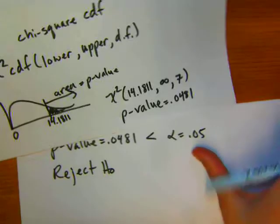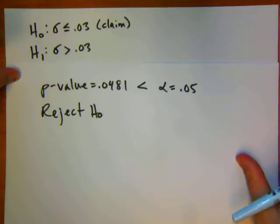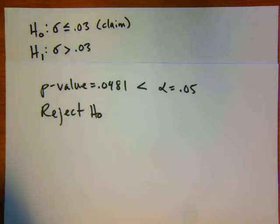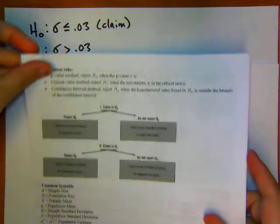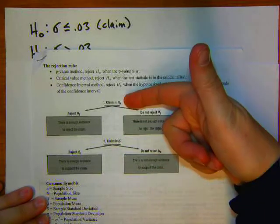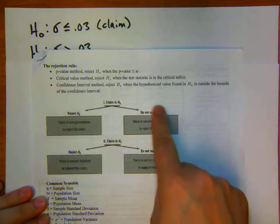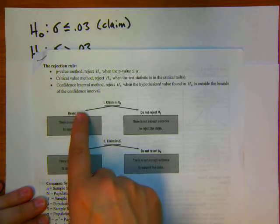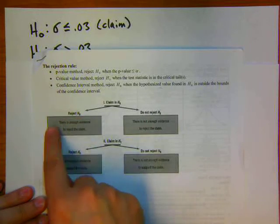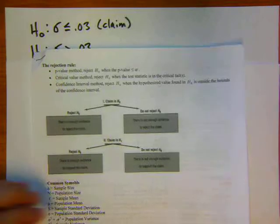Going back to our claim and decision, there is a flow chart on your hypothesis testing guide. Our claim was the null hypothesis. Since we rejected H-naught, you start your summary with: there is enough evidence to reject the claim.